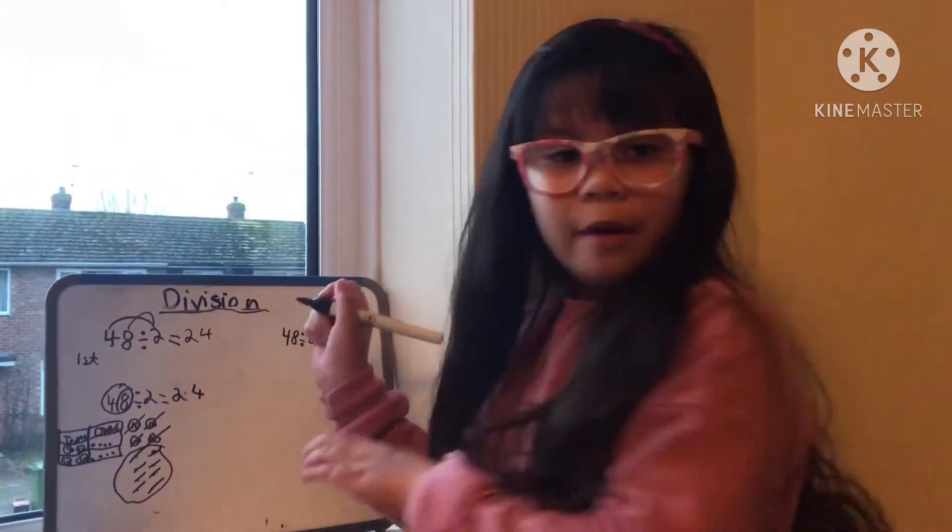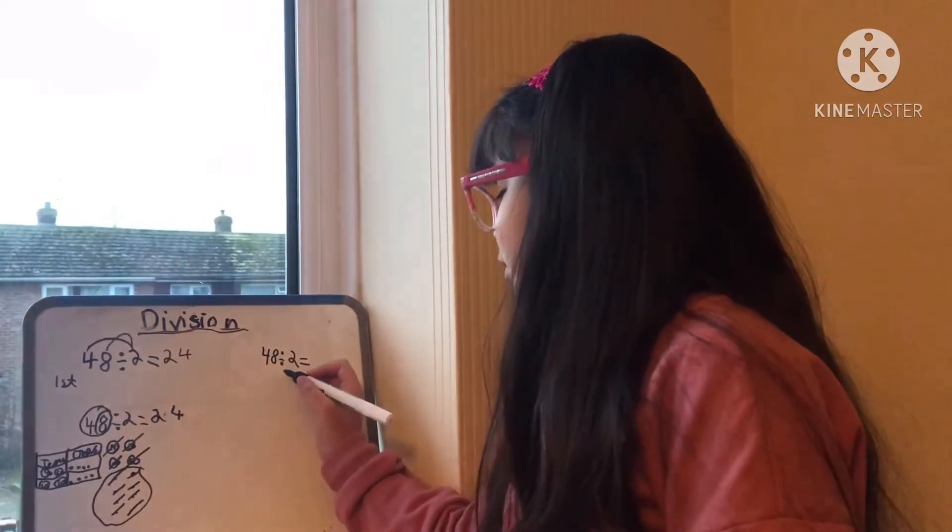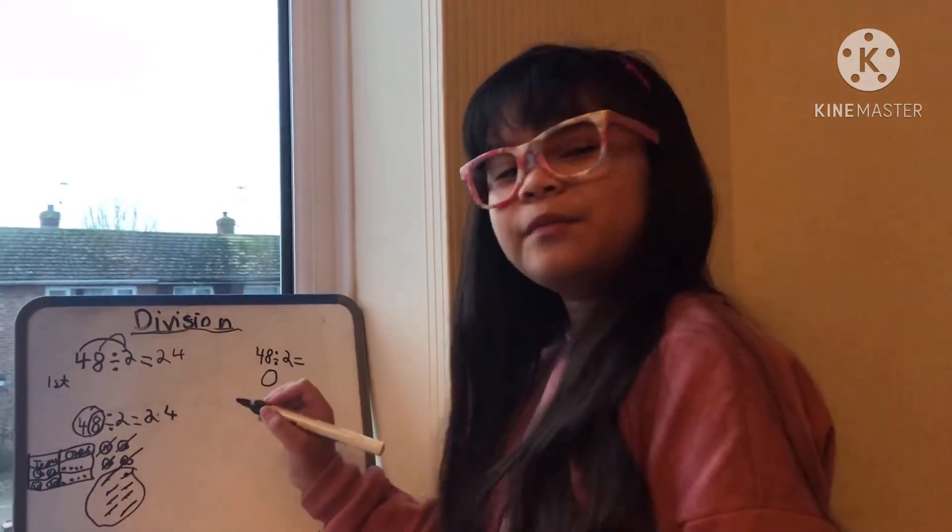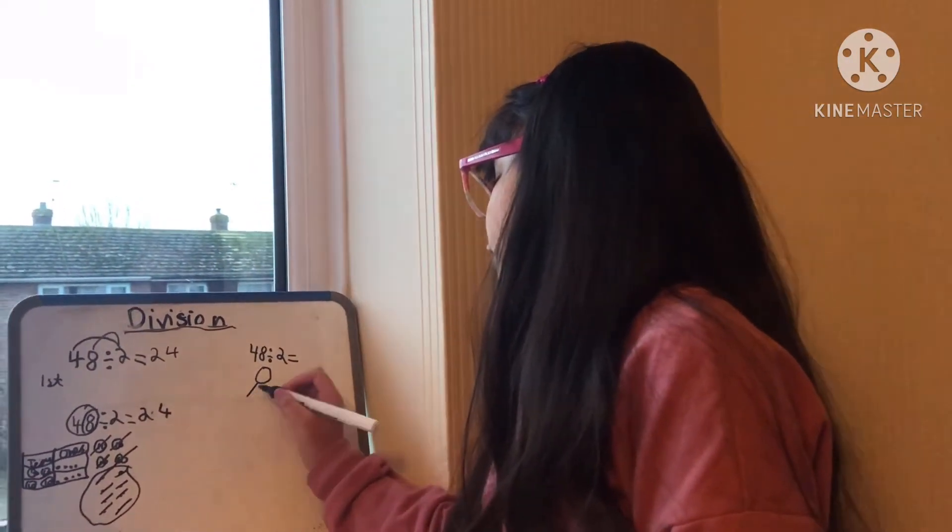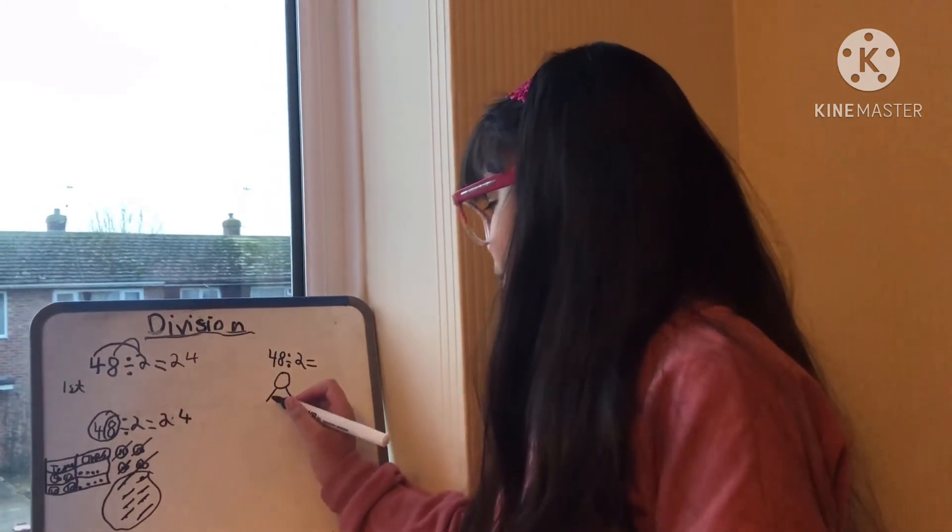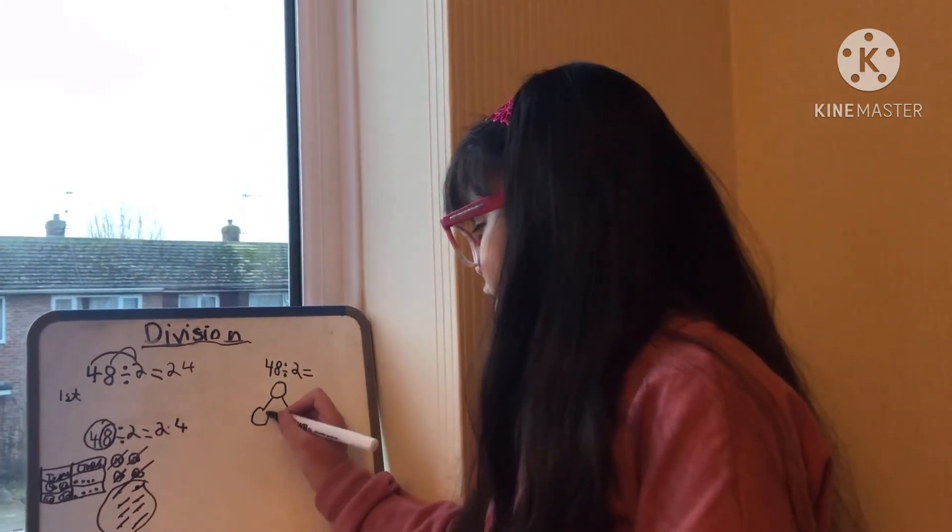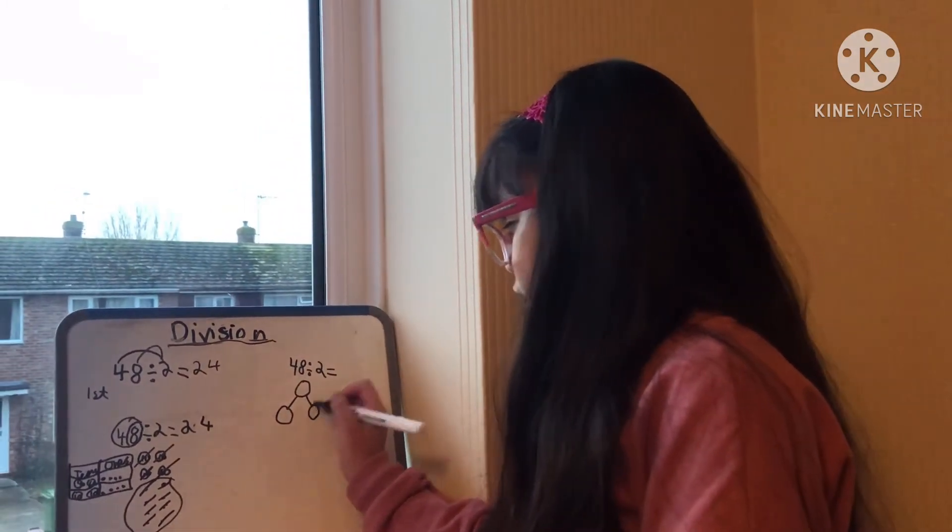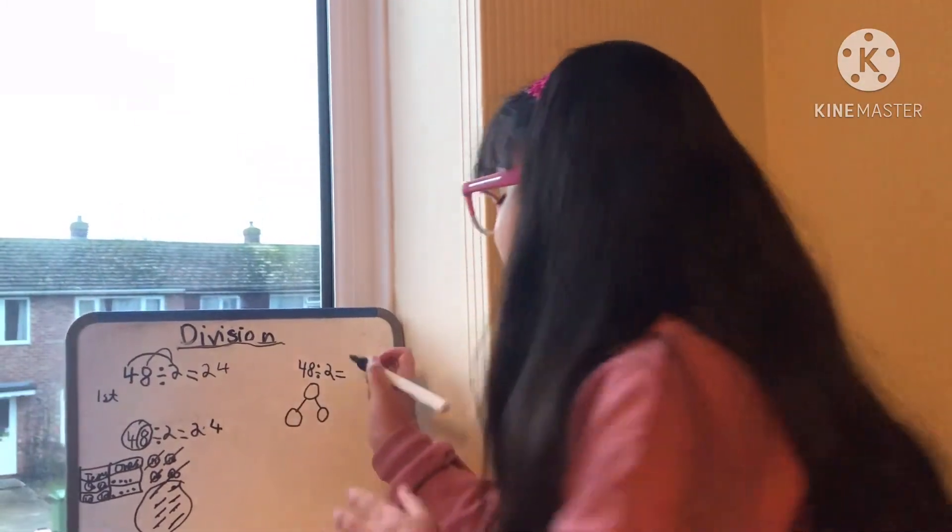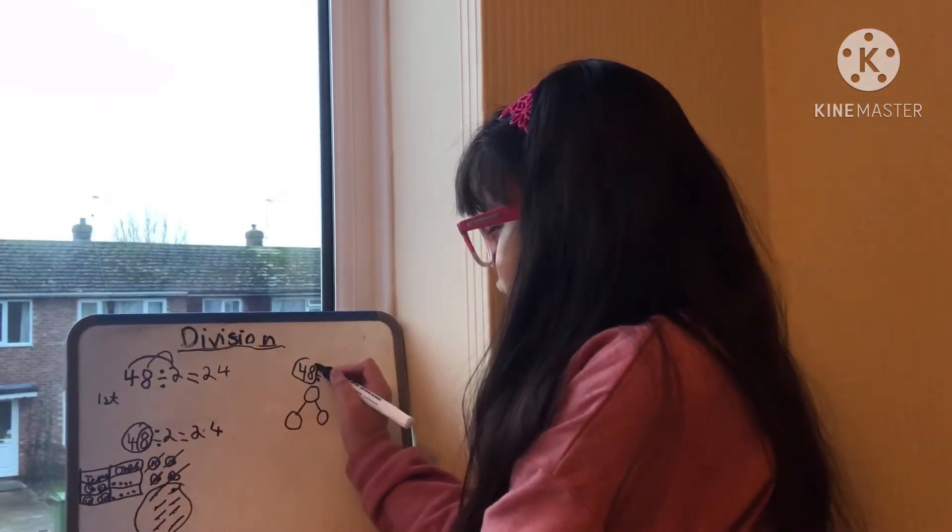So how we do it is we draw a circle first, and then you have to connect the circle into two parts and draw a circle. What we have to do, we have to draw this 48 in here.